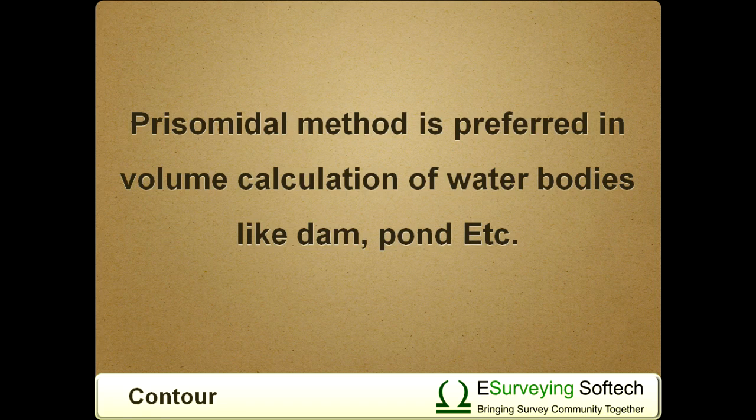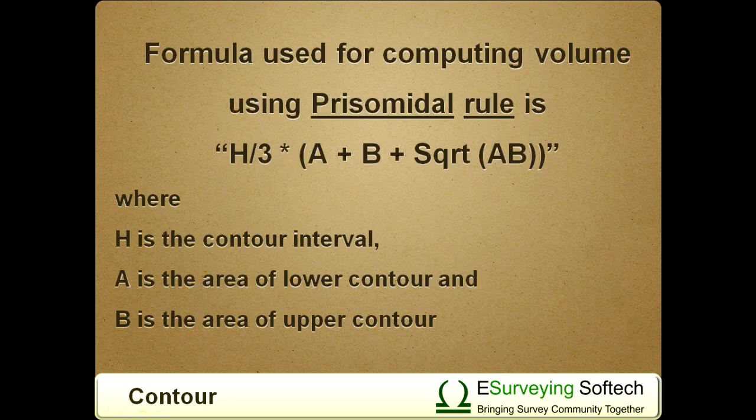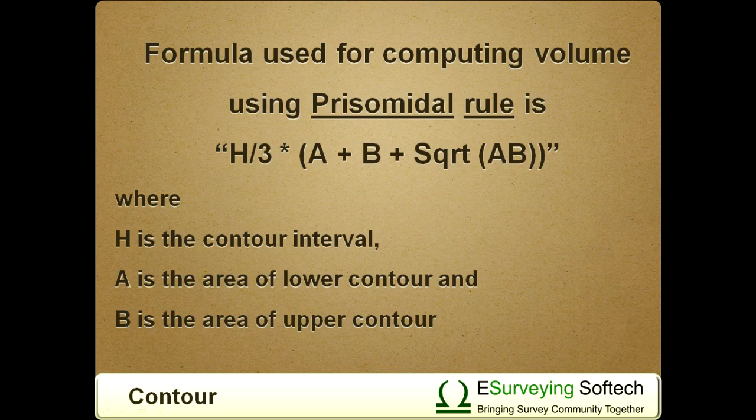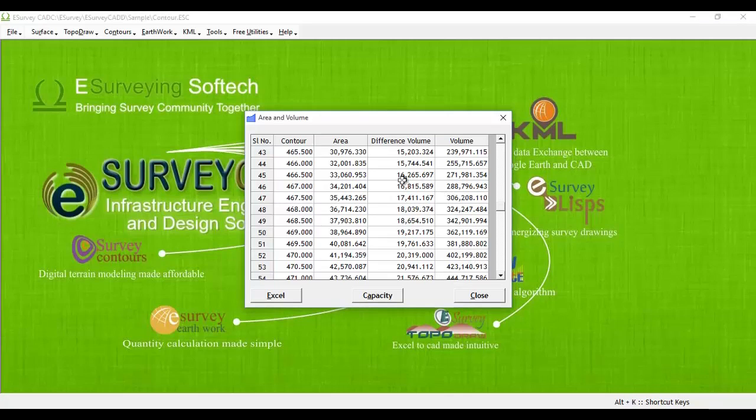The formula used for computing volume using the prismoidal rule is H divided by 3 times A plus B plus square root of AB, where H is the contour interval, A is the area of the lower contour, and B is the area of the upper contour.